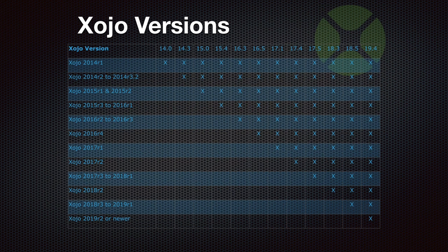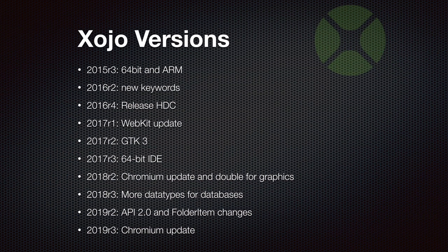Here is the table of the different versions we support with the current Xojo plugins — which is exactly all versions of Xojo. With newer plugins we introduced support for newer Xojo versions because there are changes over time. A few of those changes include production of 64-bit support or ARM CPU support. We also had to adapt to GTK3 for Linux or to newer Chromium versions used for the HTML viewer on Windows.